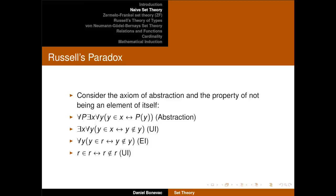Now, why is that trouble? Here's the idea, and it's a very simple argument. Making this substitution — not being a member of oneself — we can say there is an x, there is an extension, such that for any y, y belongs to this x if and only if y is not an element of y. So x is the set of all and only the things that are not members of themselves.